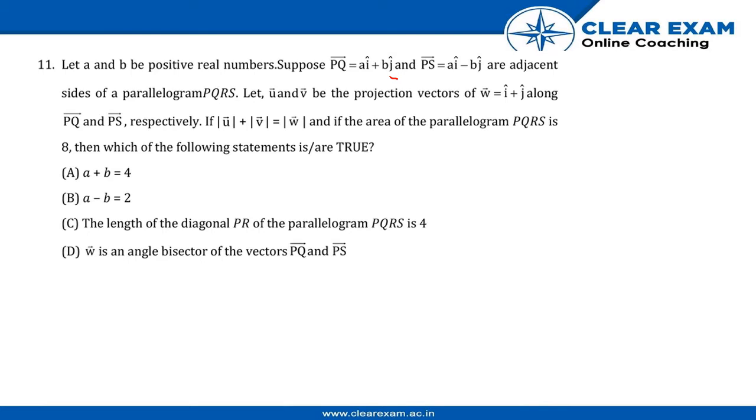(A) a + b = 4, (B) a - b = 2, (C) the length of the diagonal PR of parallelogram PQRS is 4, and (D) w is the angular bisector of the vectors PQ and PS.